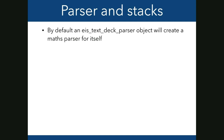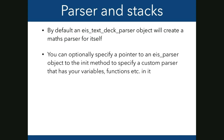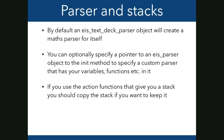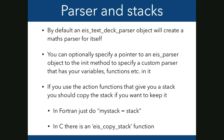By default an ICE text deck parser object creates its own maths parser, but you can optionally specify a pointer to a custom ICE parser object with your own variables, functions, and constants. If you use an action function that gives you a stack and want to keep it, copy it — in Fortran you can do a simple assignment; in C there is an ICE_copy_stack function.